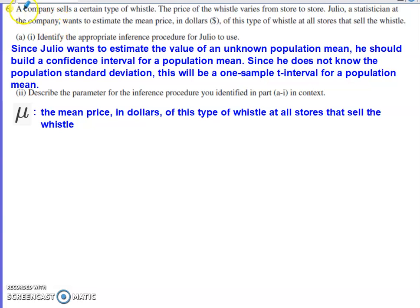In 2024, we have a situation where a company is selling a certain type of whistle. The price of the whistle is going to vary from store to store. Julio is a statistician for the company and wants to estimate the mean price in dollars of this type of whistle at all stores that sell the whistle. Part one of part A asks us to identify the appropriate inference procedure for Julio to use. Well, it flat out tells us that Julio wants to estimate the mean price at all the stores that sell the whistle. If we're trying to estimate an unknown mean or an unknown proportion, in this case it's a mean, we're definitely going to build a confidence interval.